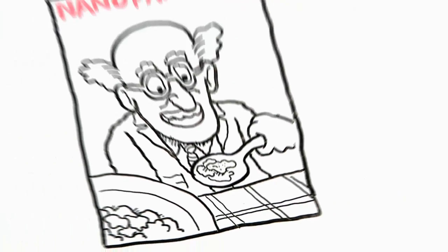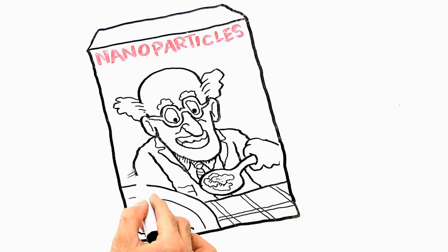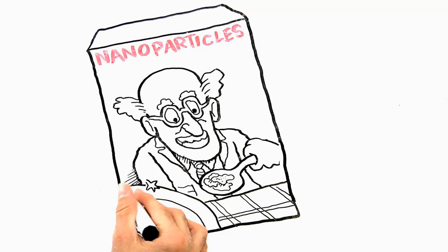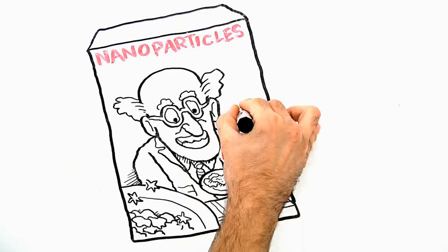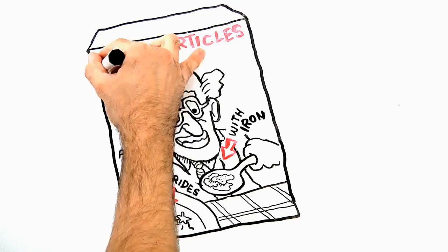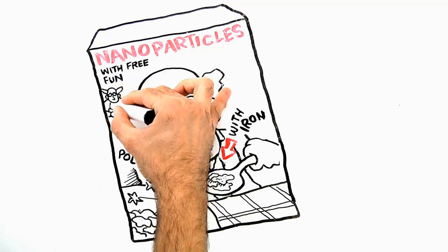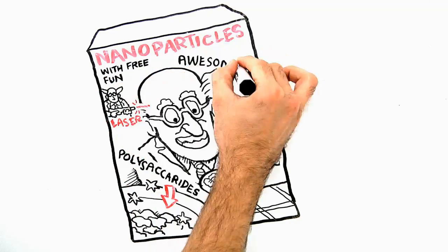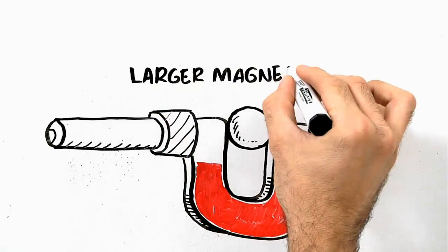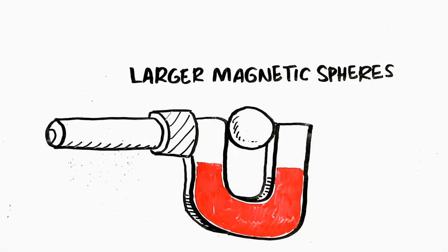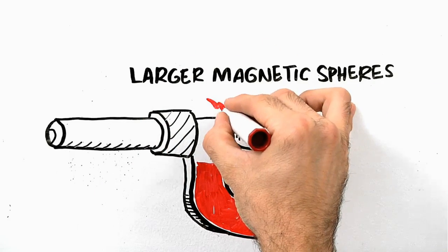So let's just call them nano-sized particles, or nanoparticles. They kind of look like cornflakes. And since these nano-sized particles are largely comprised of iron and polysaccharides, you could say that they resemble sugar-coated cornflakes.